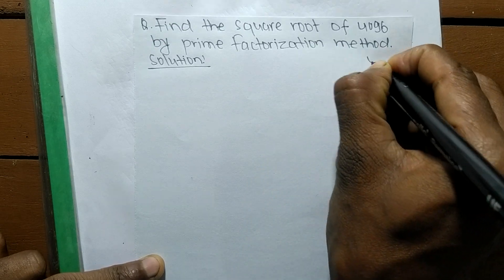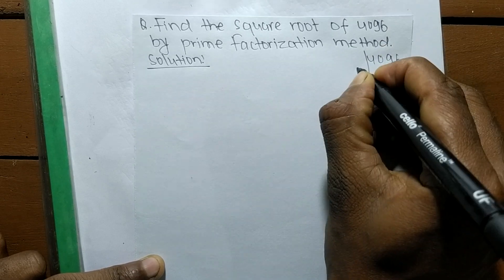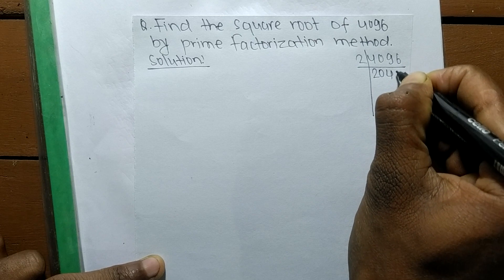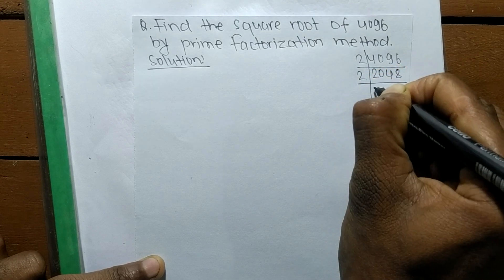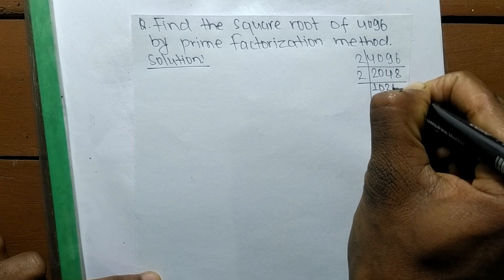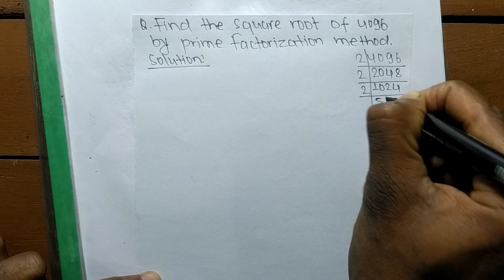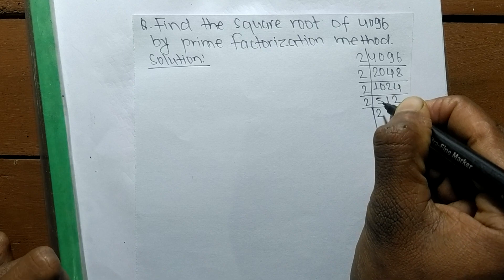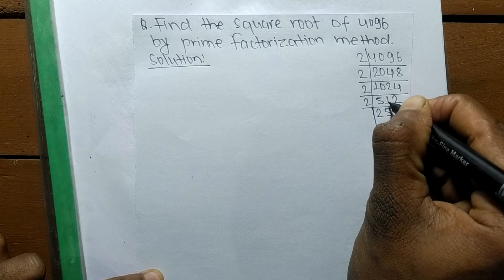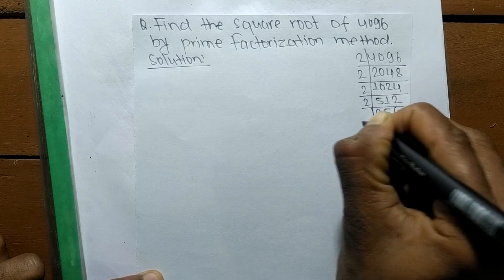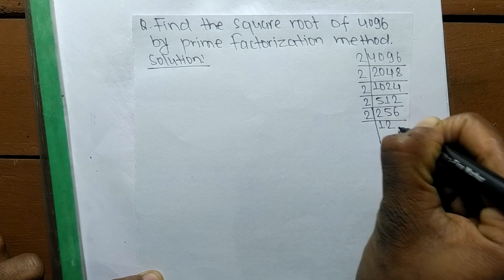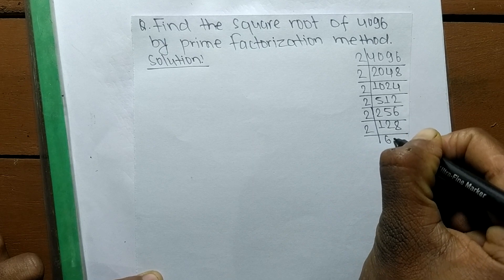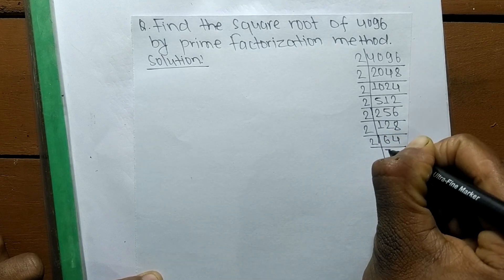So the prime factors of 4096: we divide by 2 repeatedly. 2 times 2 is 4, 2 times 4 is 8, 2 times 8 is 16, 2 times 16 is 32, continuing: 64, 128, 256, 512, 1024, 2048, and 4096. We keep dividing by 2 until the remainder is 1, giving us 12 factors of 2.